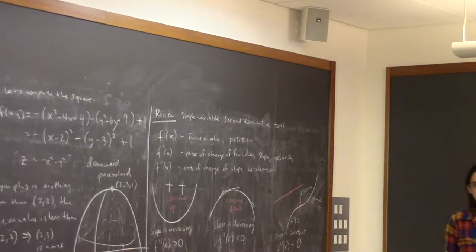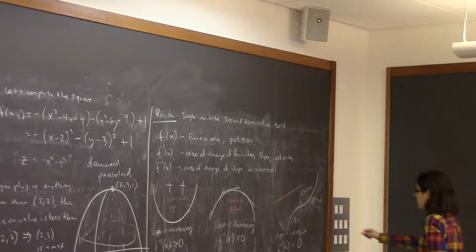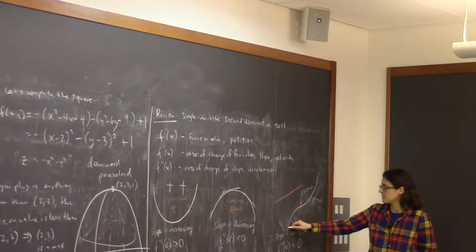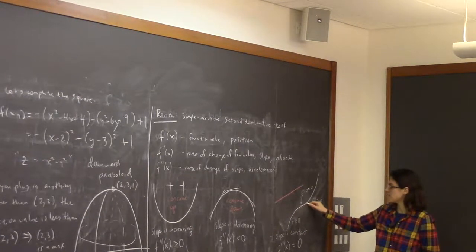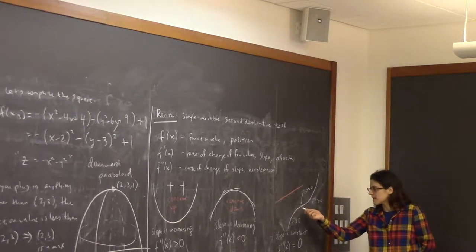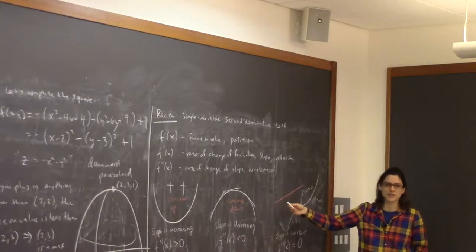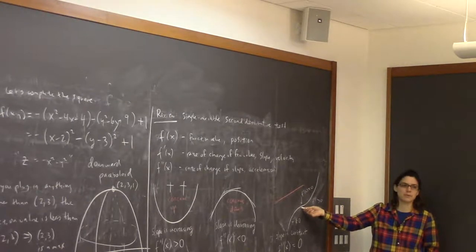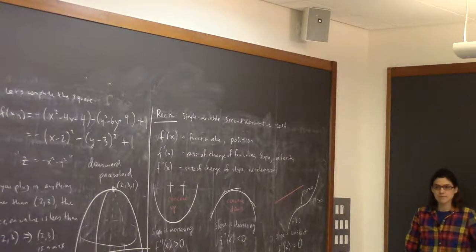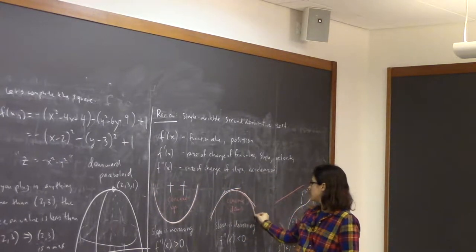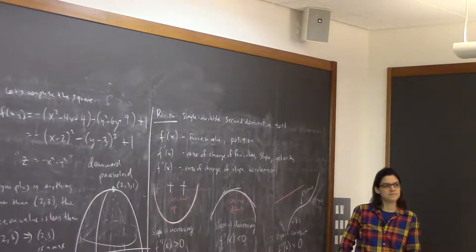To clarify: f″ is negative along the entire concave-down curve, positive along the entire concave-up curve, and zero only at the single inflection point — not along the whole curve. Similarly, f″ is zero along the entire straight line.